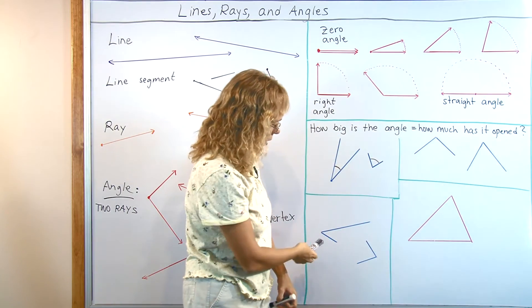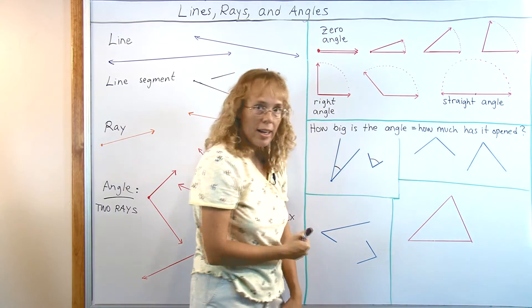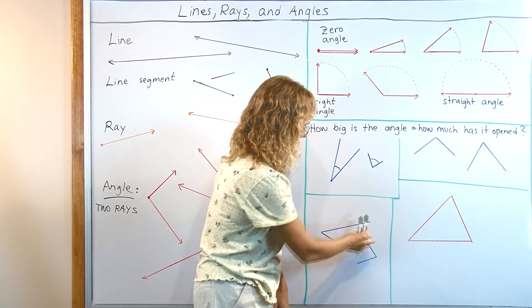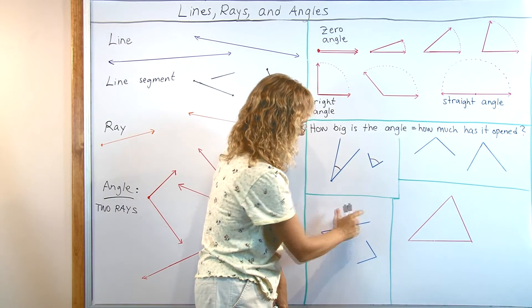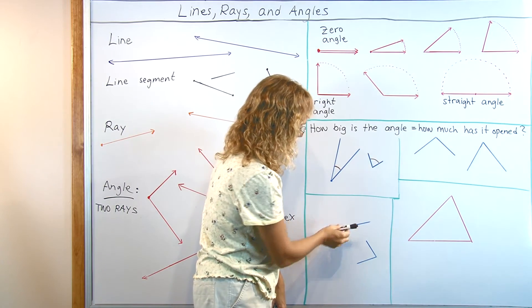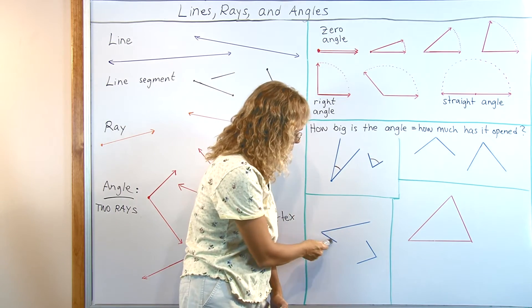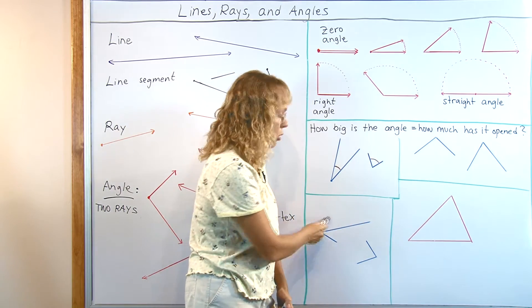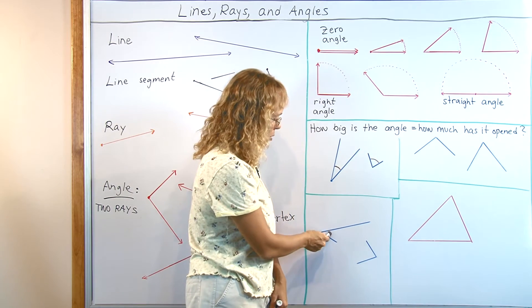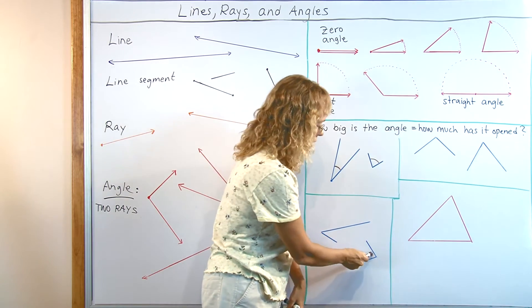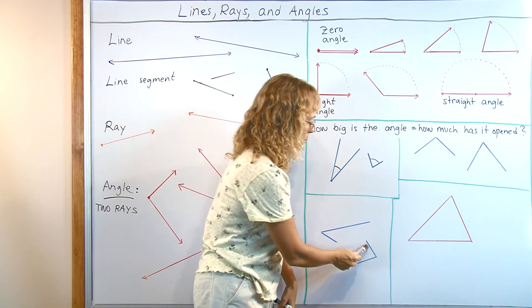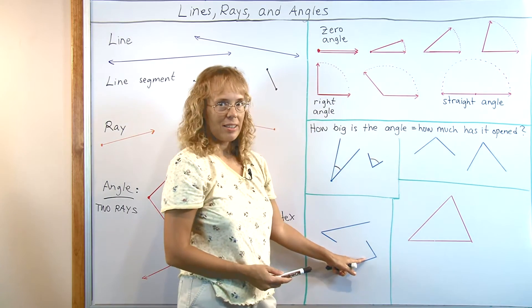Or here, again, don't look at the sides of the angle, the rays. Don't look at their length or anything. You have to look at how much has it opened. Or you can imagine yourself sitting here as if these were walls of a house and this made a corner. How much space do you have here, in this corner or in this corner? So you have more space in this corner, so this is the bigger angle, right?